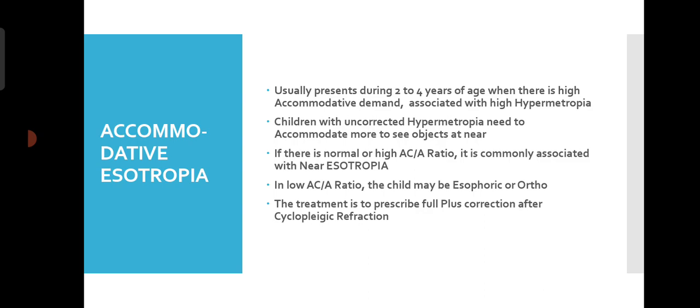If there is a normal or high AC/A ratio, it is commonly associated with near Esotropia — these are the dangerous cases. If the AC/A ratio is higher, it can give rise to near Esotropia while distance is almost normal. In a low AC/A ratio, the child may be Esophoric or Orthophoric. The dangerous cases are those with high AC/A ratio. Treatment is to prescribe full plus correction after cycloplegic refraction — we prefer a strong cycloplegic like Homatropine, or Atropine for very small children.